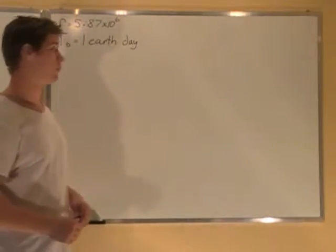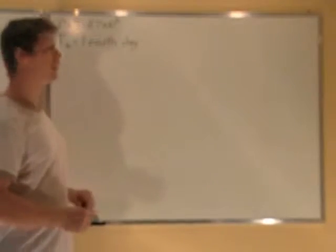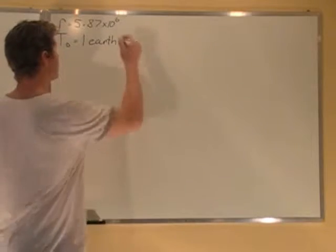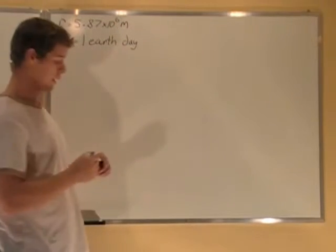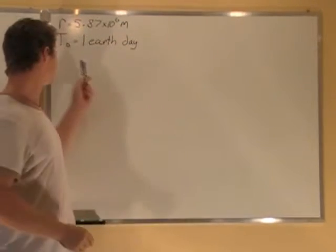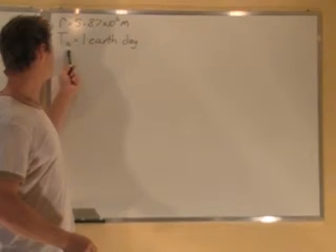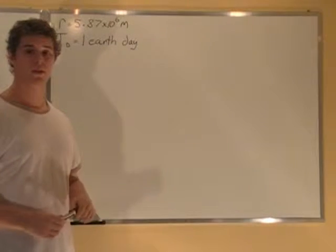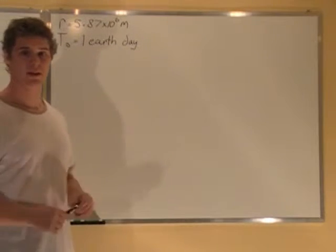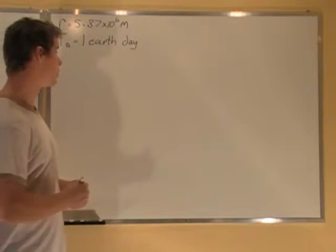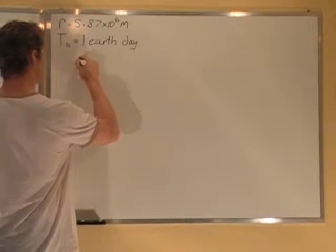If our planet Donda is a rotating sphere of radius 5.87 times 10 to the 6 meters, and its year, the period for Donda, is one Earth day, so it's a very fast rotation around its sun, what is the centripetal acceleration at two points?